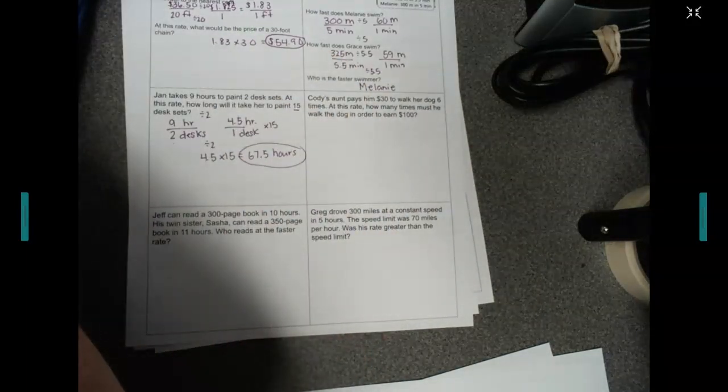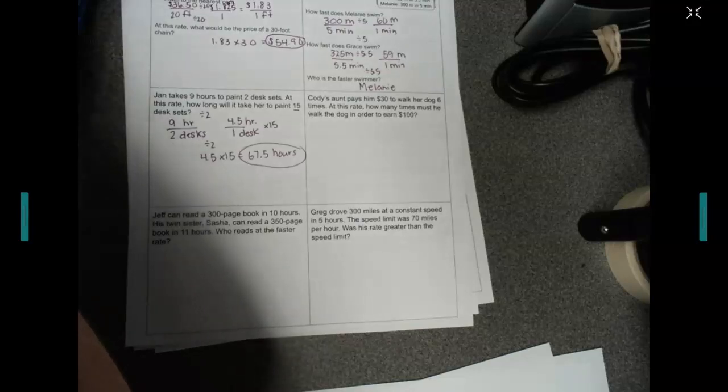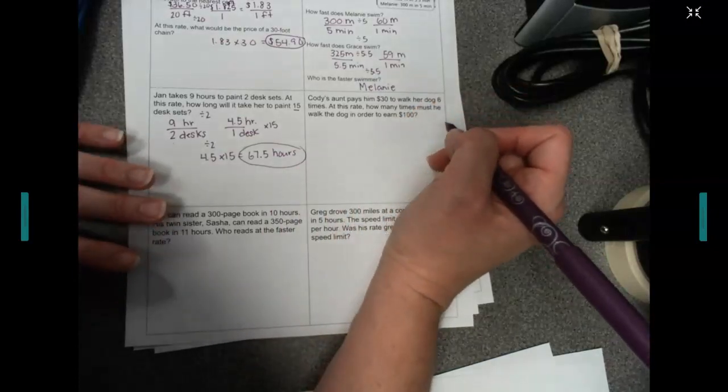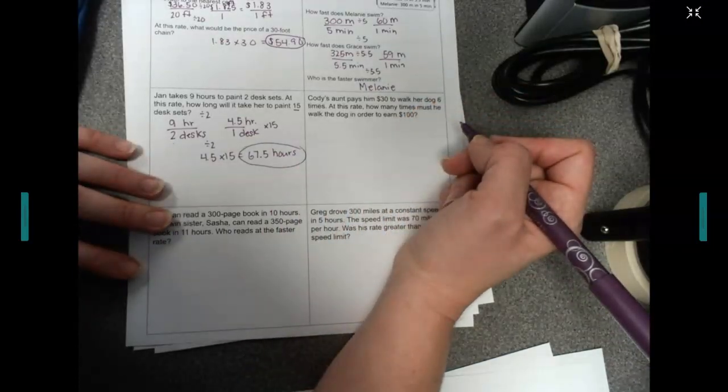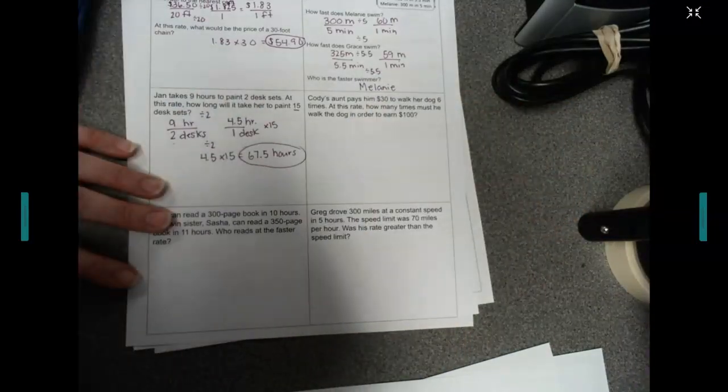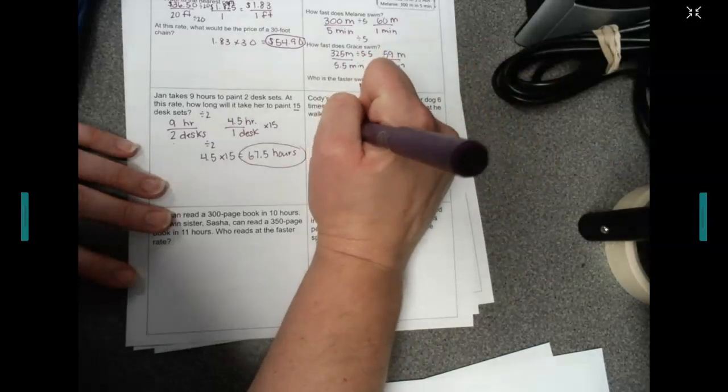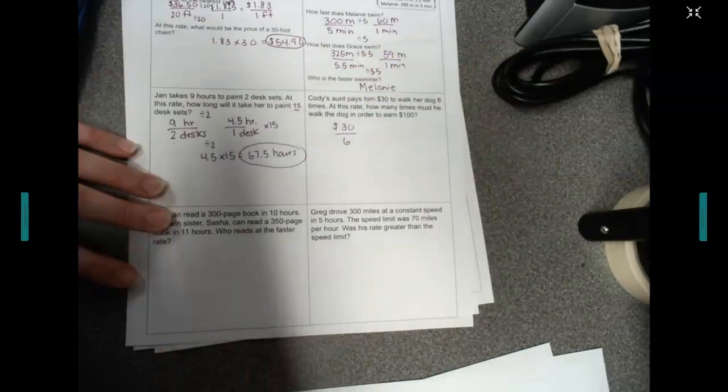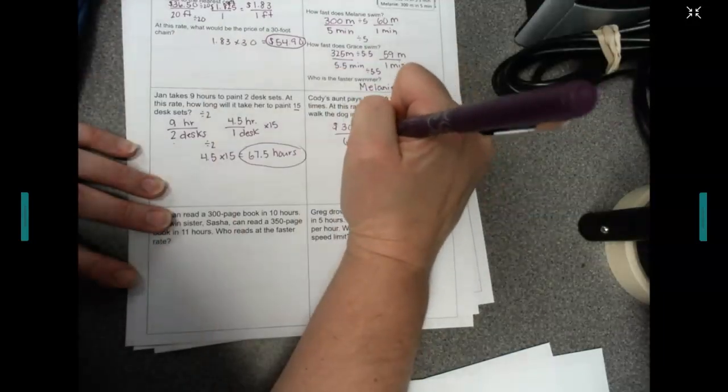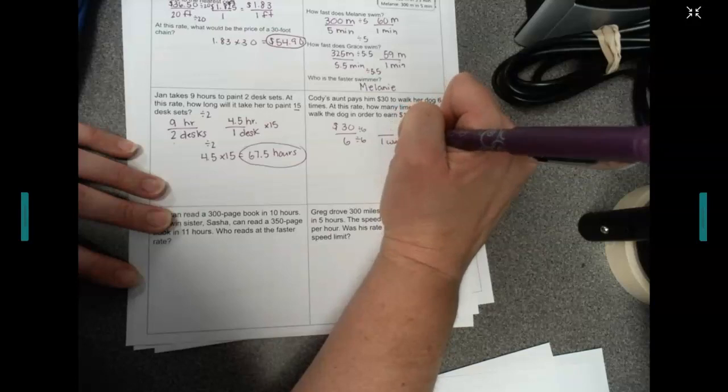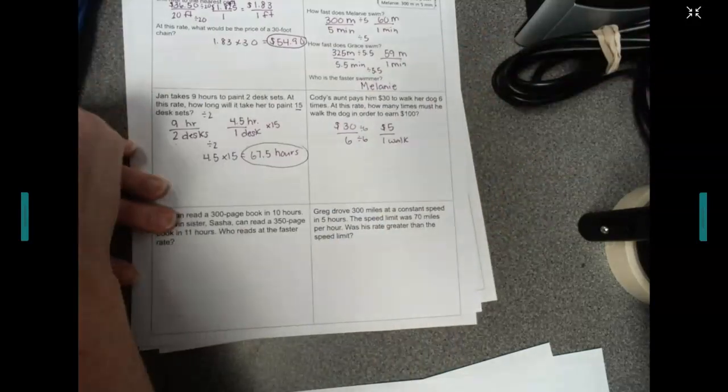Let's look at Cody. Cody's aunt pays him $30 to walk her dog 6 times. At this rate, how many times must he walk the dog in order to earn $100? So, let's solve this. So, I have $30 over 6. We're going to divide by 6 to get it down to 1 walk. And when I do that, I get $5 per walk.